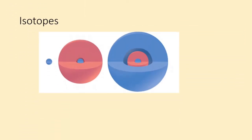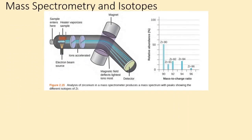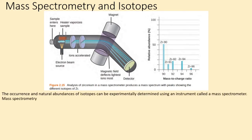The isotopes are atoms that contain the same number of protons but different numbers of neutrons. The occurrence and natural abundances of isotopes can be experimentally determined using an instrument called a mass spectrometer.